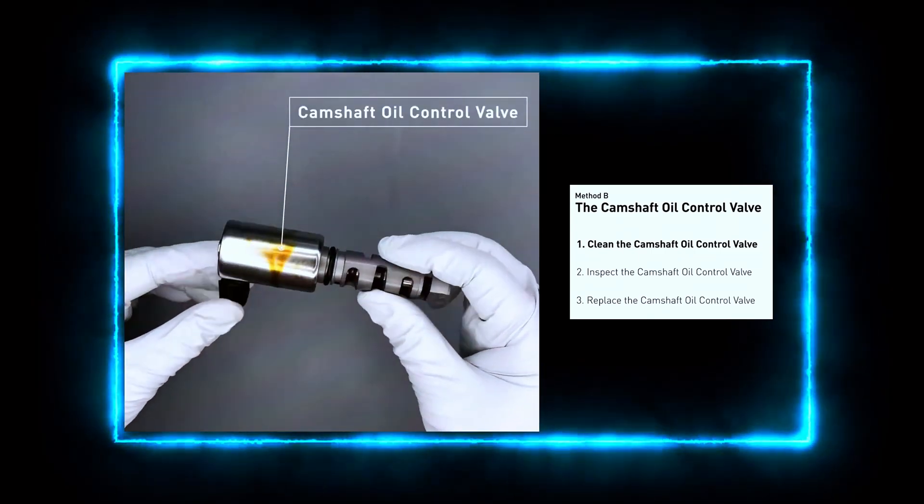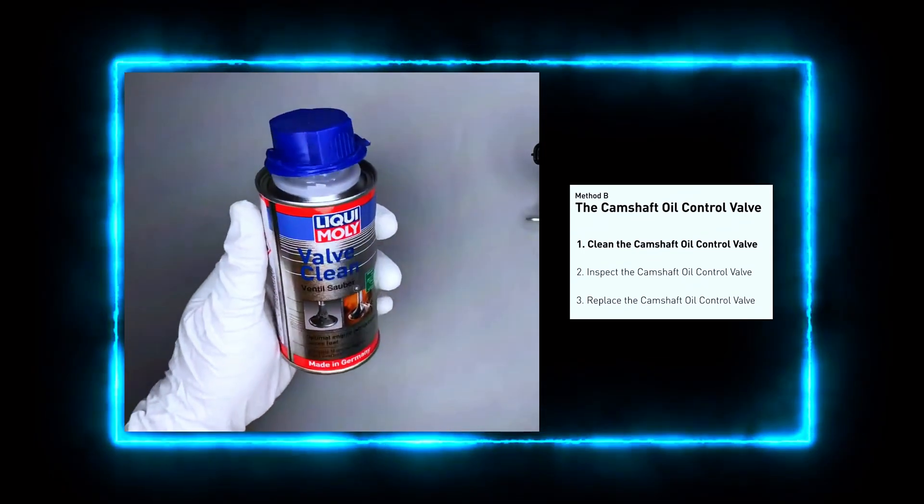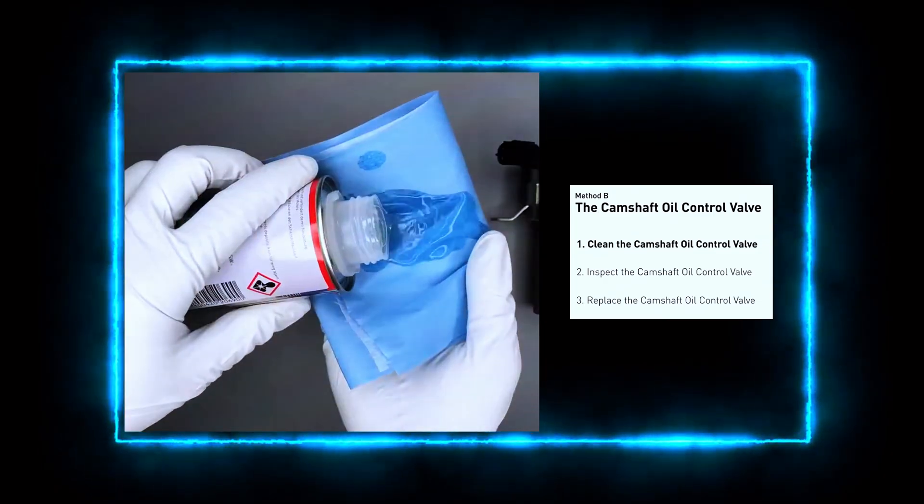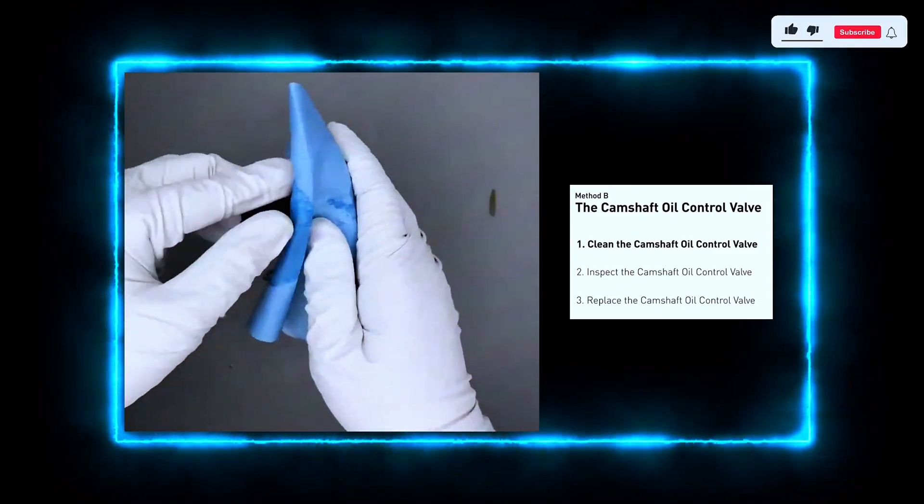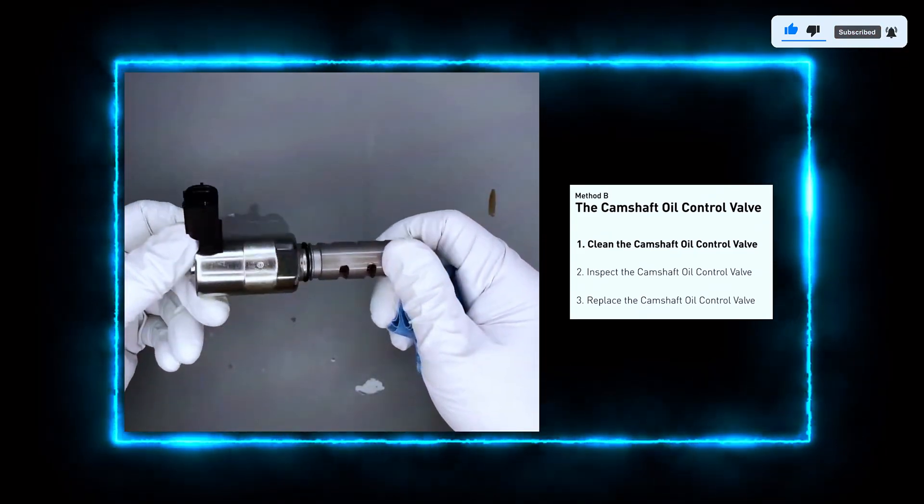Clean the oil control valve using a brake cleaner or electrical contact cleaner spray. The valve thoroughly to remove any dirt or sludge buildup. Be sure to clean the valve's filter and any passages. Wipe it down with a clean cloth and let it air dry for a few minutes.